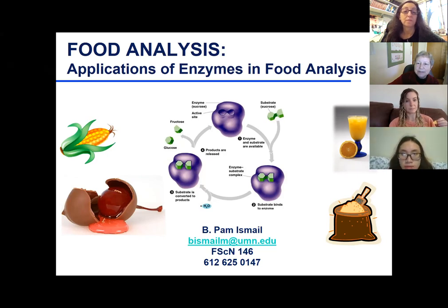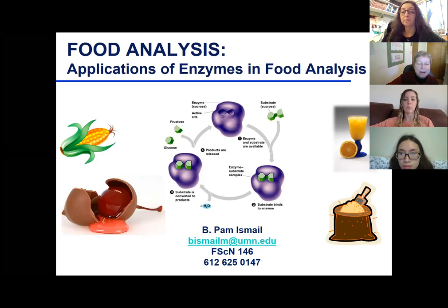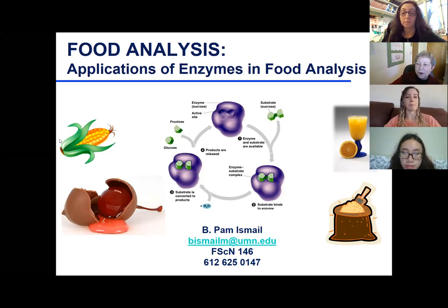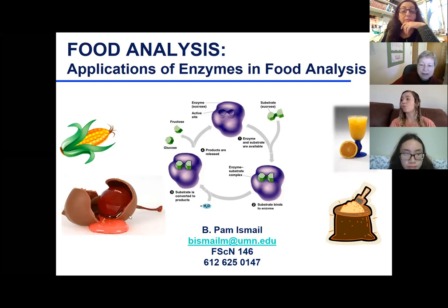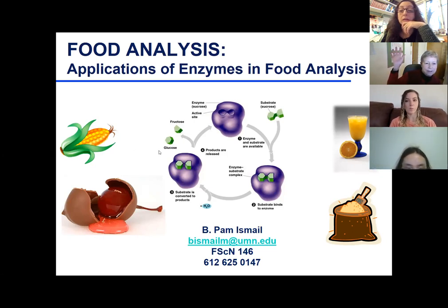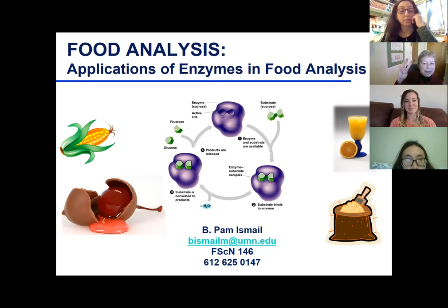So I'm going to ask you for a show of hands. This center picture goes along with one of the four items around this. Number one will be the corn, number two is the orange juice, number three is the bag of flour, and number four is the chocolate covered cherry. Which one does this diagram relate to?